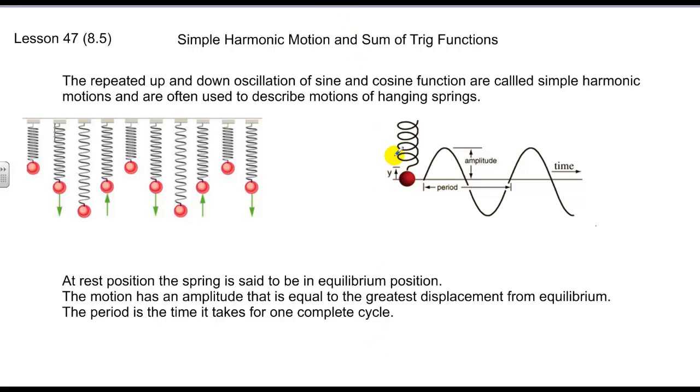And as you can see over here on the right, here's the spring. When it's hanging at rest, we say that's at equilibrium position, and then its maximum displacement, in other words how much it varies from equilibrium, is called the amplitude.